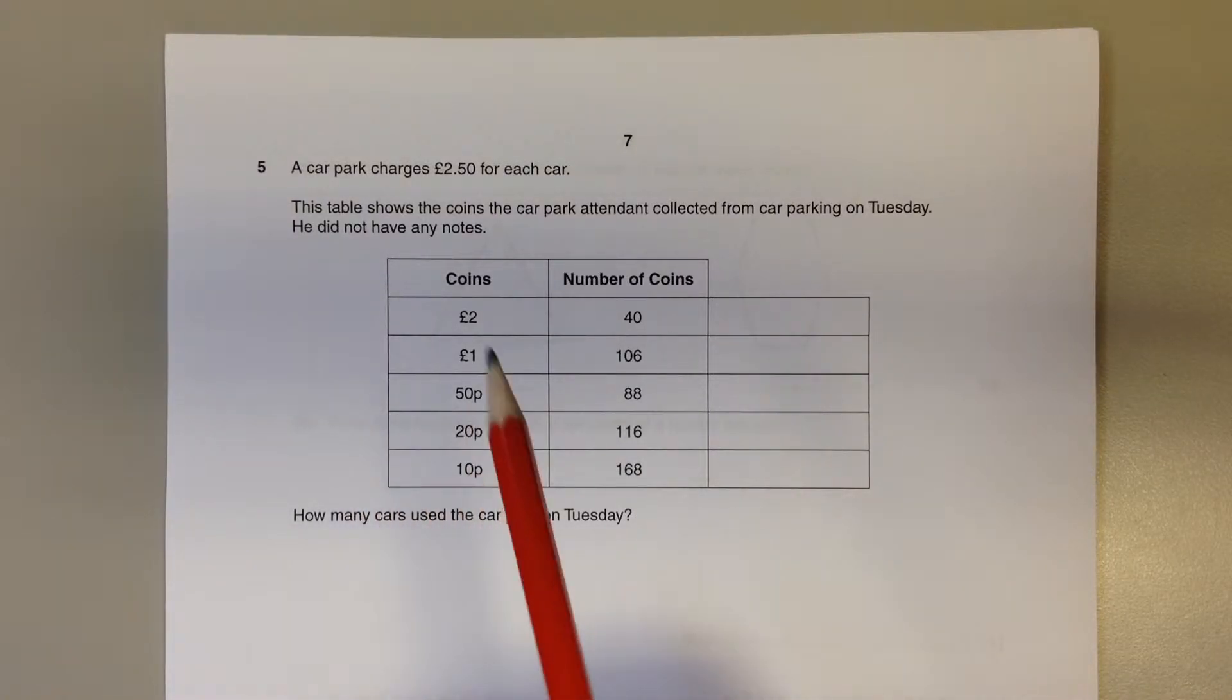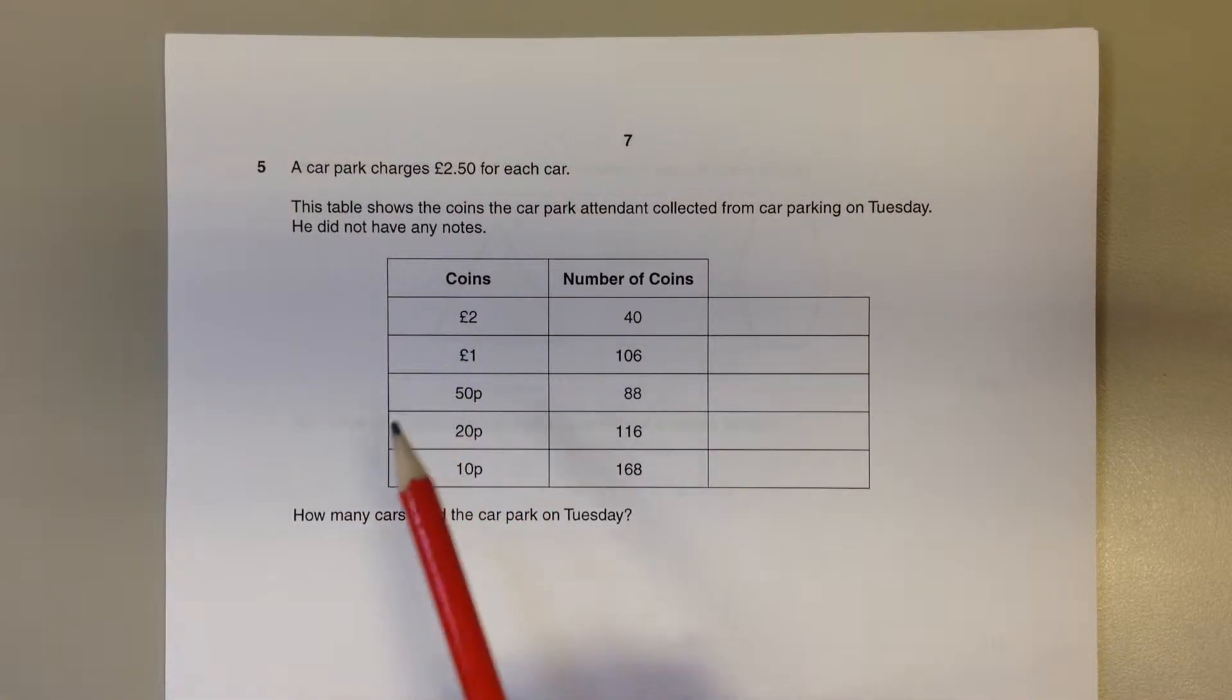Question number 5. A car park charges £2.50 for each car. This table displays the coins collected, and this is all of the coins. The question is how many cars used the car park on Tuesday.